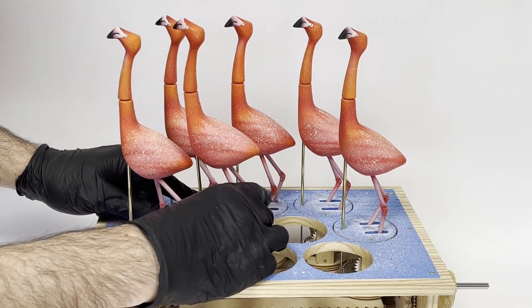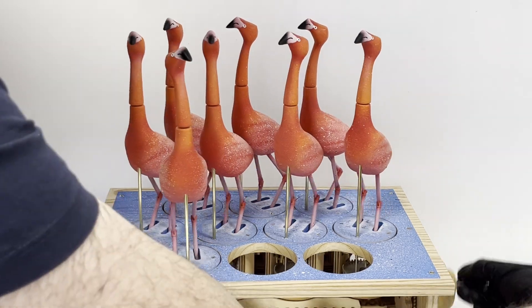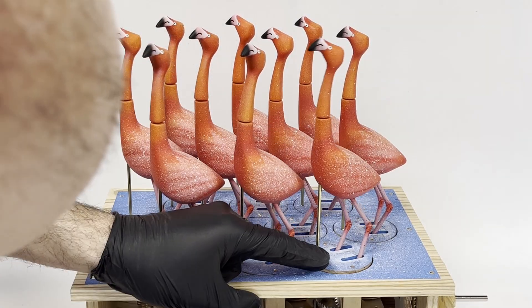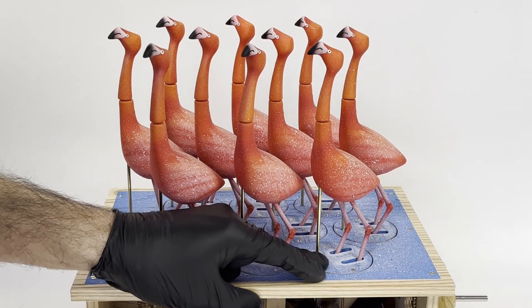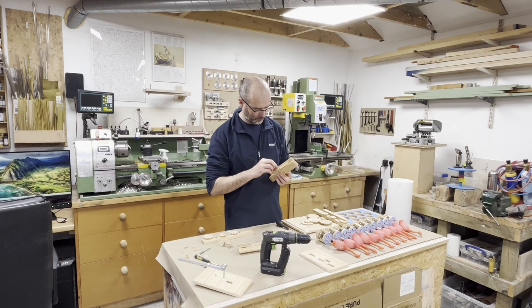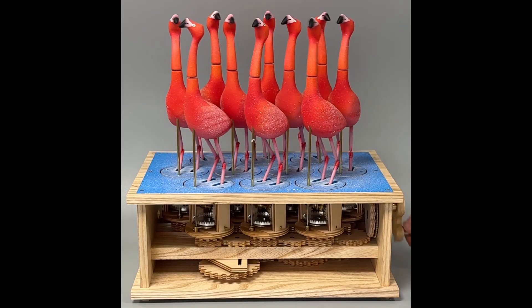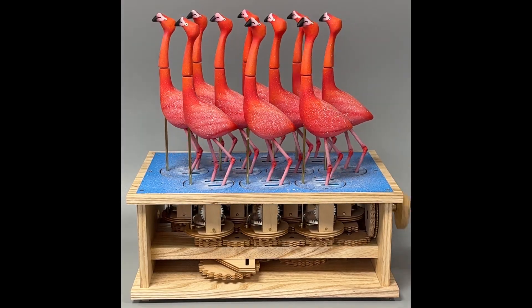When I operated it for the first time I noticed the flamingos were shaking far more aggressively than they should. It took a while to figure out why, but eventually I realized the bearings weren't tight enough in their housings on the support struts. So I took everything apart and made new supports with tighter bearing fits, and that completely solved the problem.